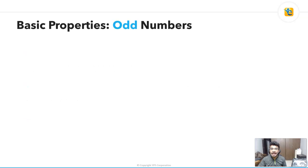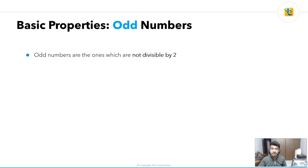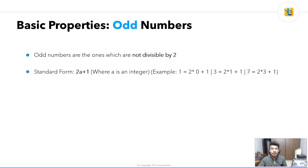Now let's look at the basic properties of odd numbers. Odd numbers are those not divisible by two — for example, 1, 3, 5, 7, 19, 23. The standard form for an odd number is 2a + 1, where a is an integer (positive, negative, or zero). For example, 1 can be written as 2×0 + 1, and 3 as 2×1 + 1. All numbers expressible as 2a + 1 are odd.